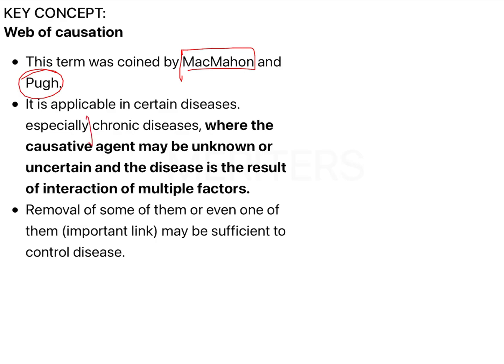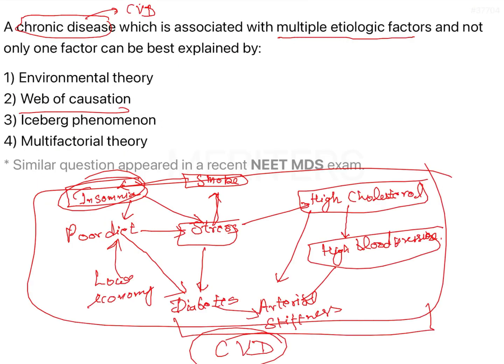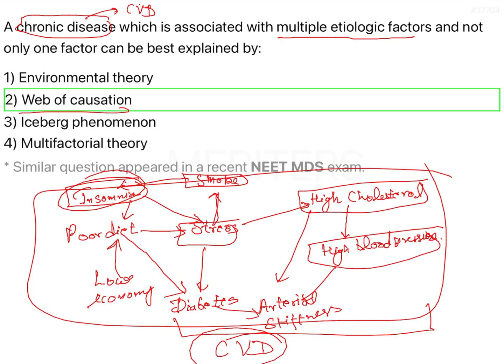The web of causation is a term coined by MacMahon and Paul. It is applicable especially to chronic diseases where causative agents are unknown or uncertain, and it involves an interaction of multiple factors. If you remove even one of the key factors — known as the important link or key factor — you can control the disease itself. The answer to this question is the web of causation: generally seen in chronic disease where multiple etiological factors interact with each other and lead to that chronic disease.